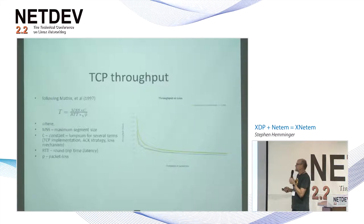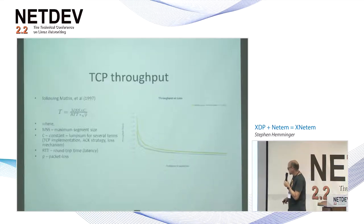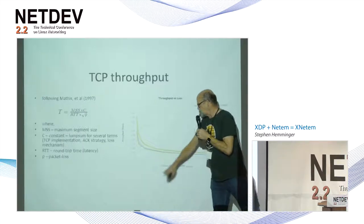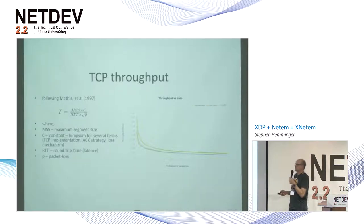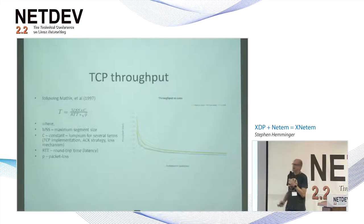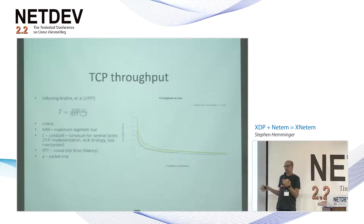Here's an example of what a test looks like. You take TCP throughput, and this is packet loss at the bottom — about 10% packet loss down to about 1%. There's an equation that says for a loss-based TCP, the maximum throughput you can get is based on the segment size, a constant, the round-trip time, and the packet loss. You can measure different TCPs versus the model — this one has Reno and Cubic. If you want to test BBR versus Cubic under packet loss, NetEM is a really easy way to do that.